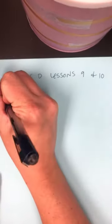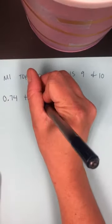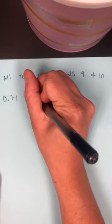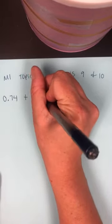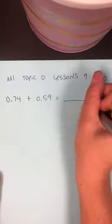Okay, so we're going to go ahead and finish up with lesson 9 and look at lesson 10. So the next problem that we're going to do, we left off on, is 0.74 plus 0.59. Okay, equals blank.